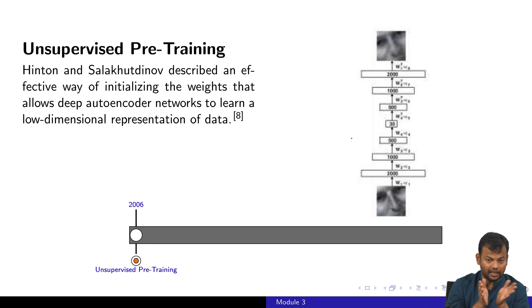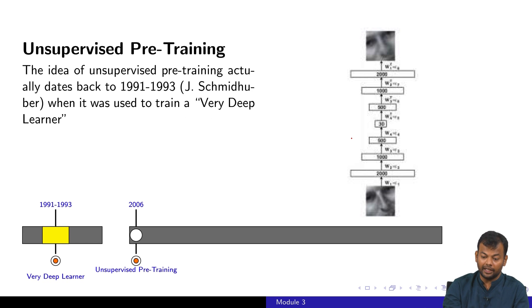But now with this technique there was revived interest and hope that you can actually train very deep neural networks for practical problems. This sparked interest again and people started looking at all sorts of things. Even this particular study done in 2006 was actually very similar to something done way back in 1991-93, which showed you can train a very deep neural network.